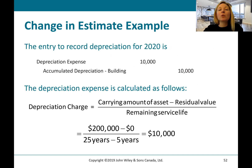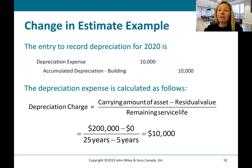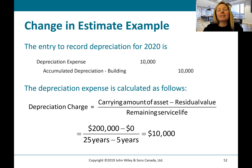The entry to record depreciation for 2020 is calculated as follows. We take the carrying amount of the asset — $200,000 — minus the residual value, which is zero, over the remaining life. The total life was revised to 25 years, but five years have already passed, so the remaining life is 20 years. That gives us depreciation going forward of $10,000 per year.